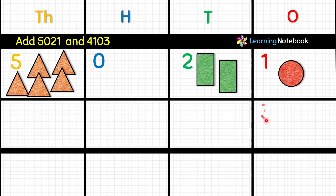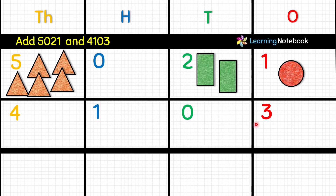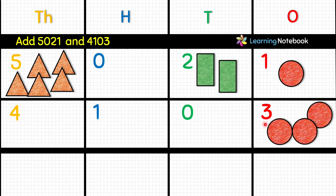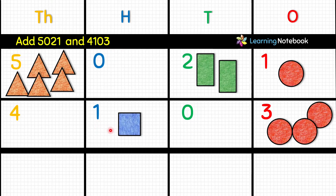The next number is 4103: 3 is at the ones place, 0 is at the tens place, 1 is at the hundreds place, and 4 is at the thousands place. So put 3 red circles, nothing for tens, 1 blue square, and 4 triangles.